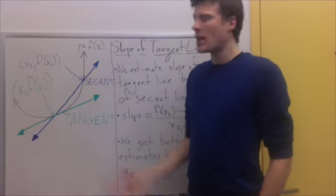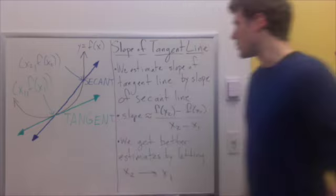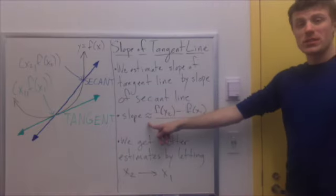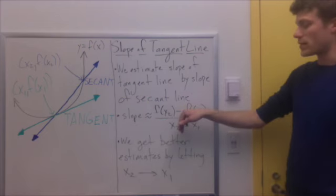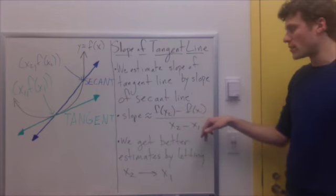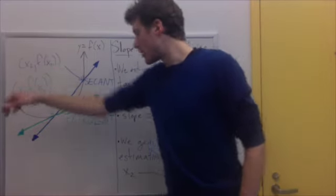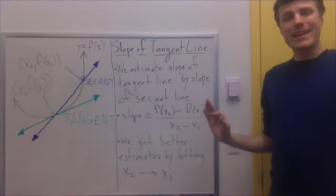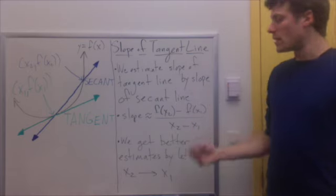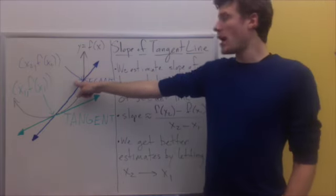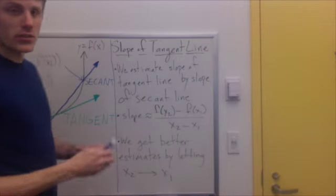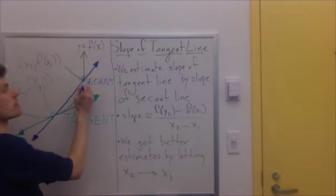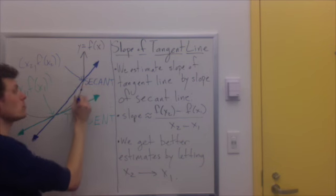It's clearly not the same thing, but its slope is close to it. So we can get the slope of the tangent. The slope of the tangent line is estimated by the slope of the secant line, which is f of x2 minus f of x1 over x2 minus x1 — difference in y coordinates over difference in x. Now we can get better and better estimates of the tangent line by letting this extra point, x2, get closer and closer to x1. So I can take a slightly better value for x2, get a slightly better secant line.